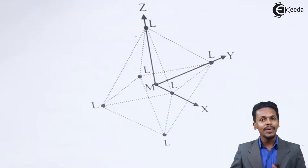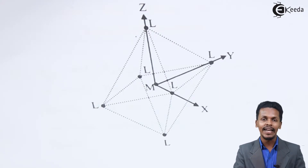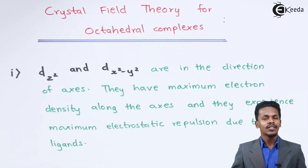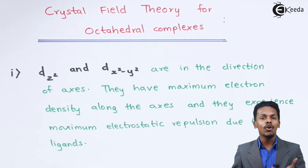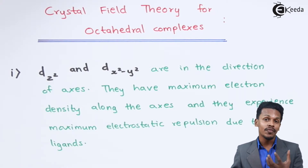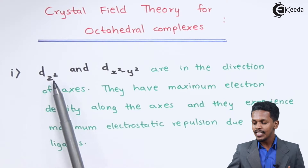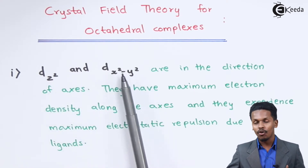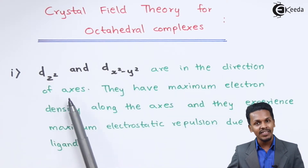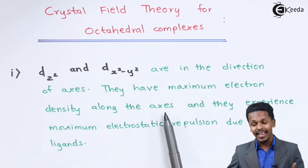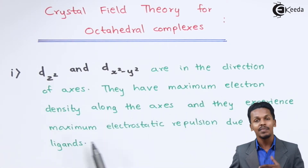Based on that, let me explain what the splitting of the electrons is and how it will take place. We understand that the d orbitals for the metal atoms will split because whenever a ligand approaches the d orbital, they will split into two other energy levels. The dz² and dx²-y² orbitals are in the direction of the axis, and they have maximum electron density along the axis.